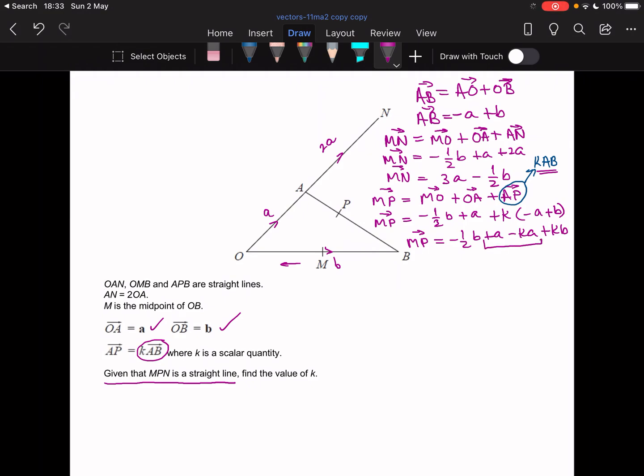Now what I'm going to do is factorize. So I'm going to factorize the terms in a. So MP, I'm going to take a common factor of a. And inside the bracket, I'd have 1 minus k. And then I'm going to take a common factor of minus b. And inside the bracket, I'm going to have half minus k.